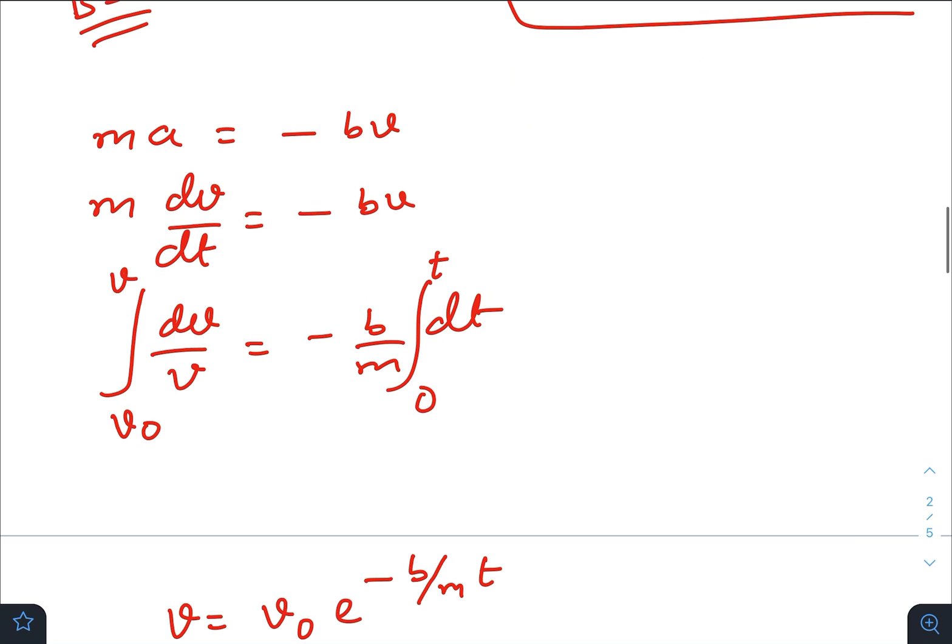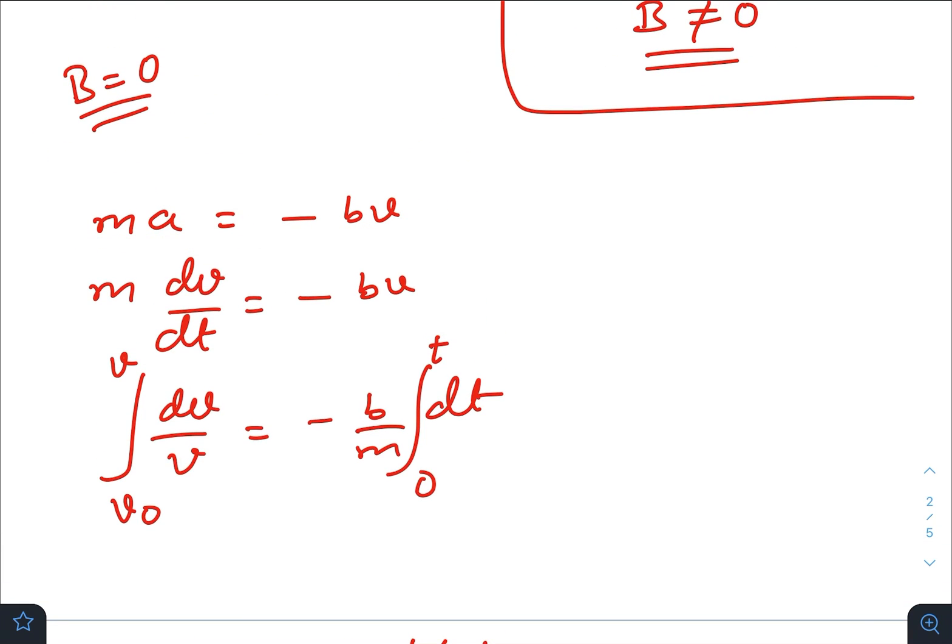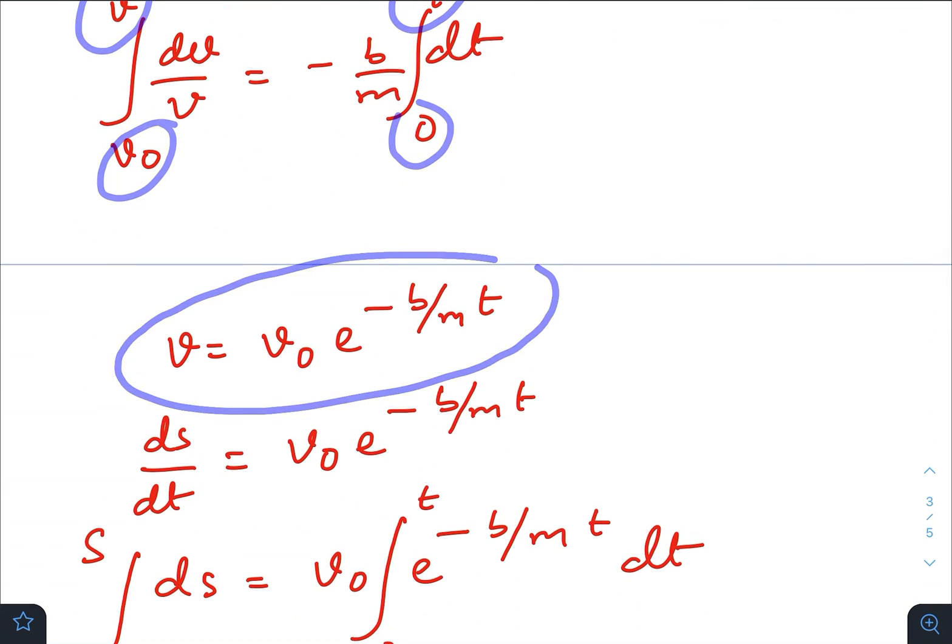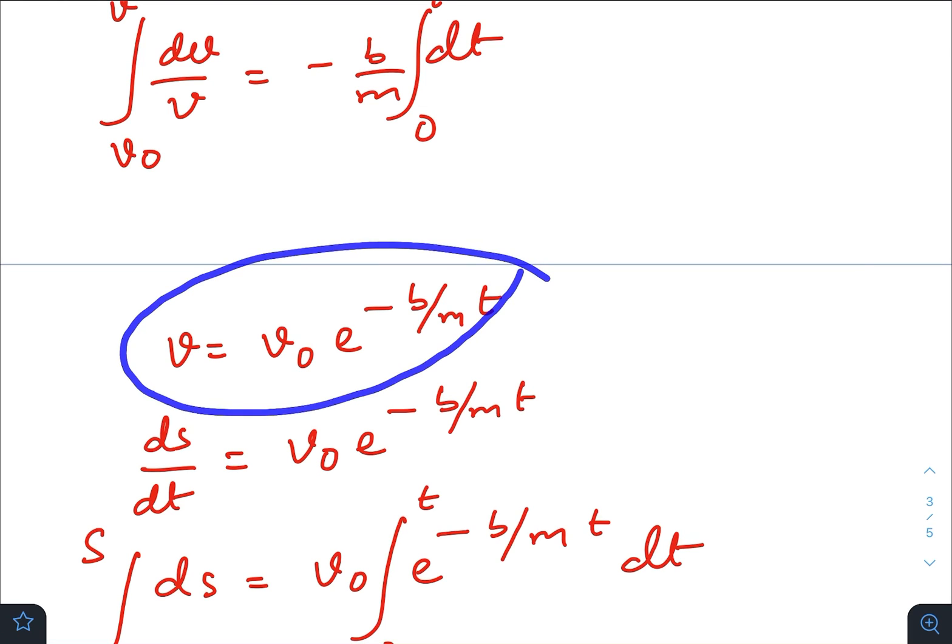So at any instant the force acting on the particle, of course in absence of magnetic field I have considered, because if we work with distance both situations are same. So ma = -bv, and m(dv/dt) = -bv. Integrating from v0 to v for any time t, we get the expression of v. So the speed of the particle is changing with time like this.